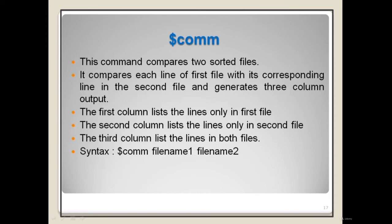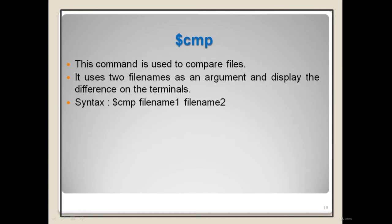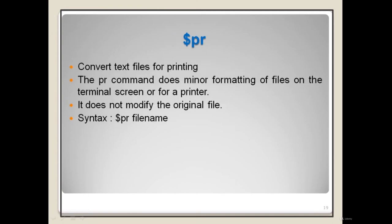Syntax for diff: 'diff file1 file2'. In the output, 'a' means add text, 'c' means change, and 'd' means delete. Lines from the first file are indicated by '<' and lines from the second file by '>'. The 'comm' command compares two sorted files line by line, generating three-column output: column 1 for lines only in file 1, column 2 for lines only in file 2, column 3 for lines common to both. Syntax: 'comm file1 file2'. The 'cmp' command compares two files and displays byte and line number of the first difference.